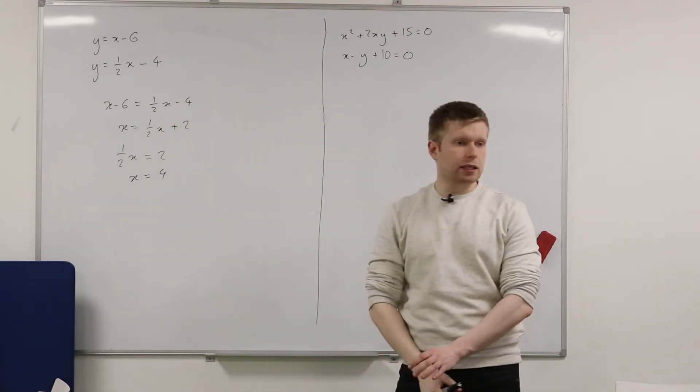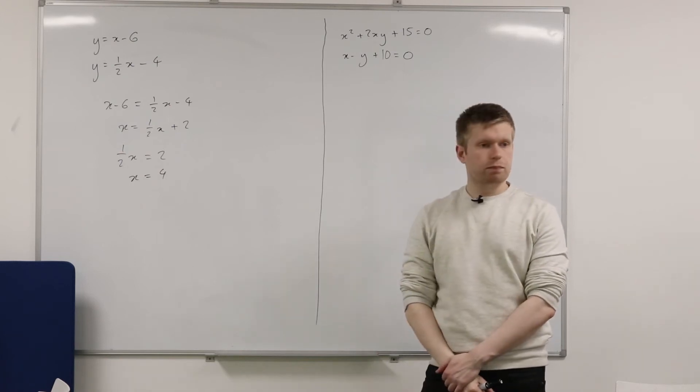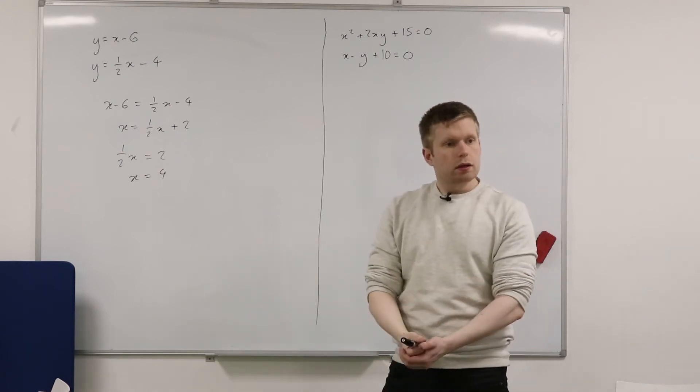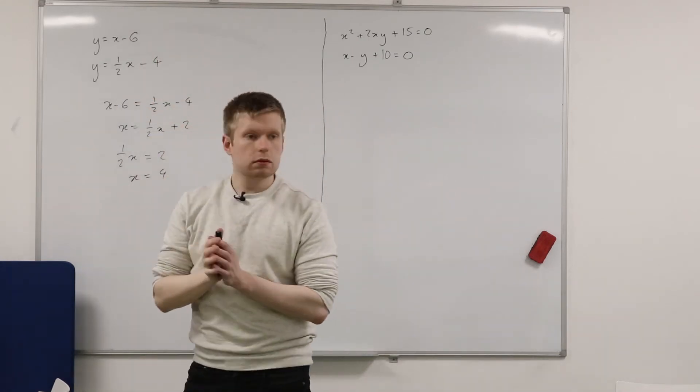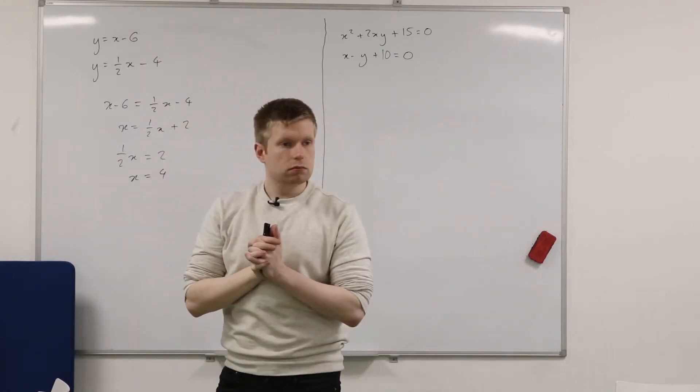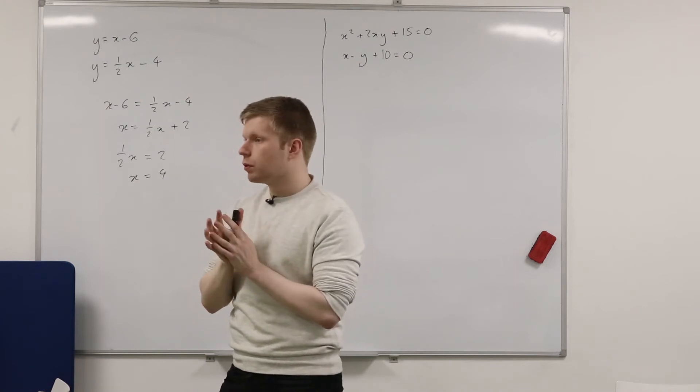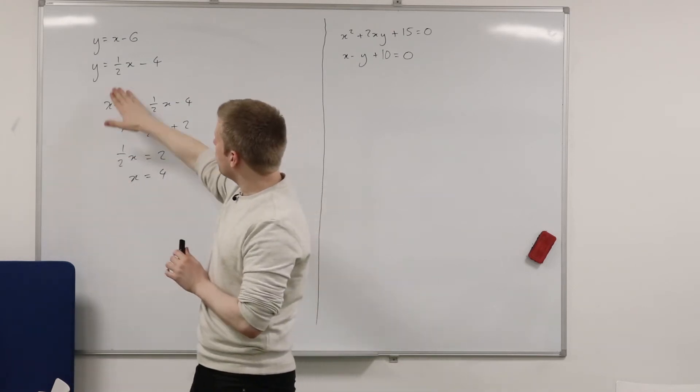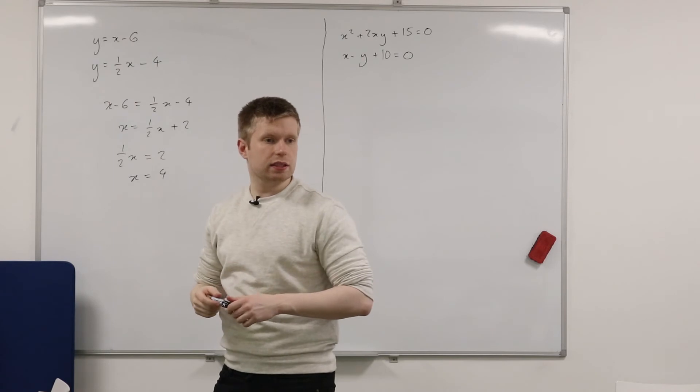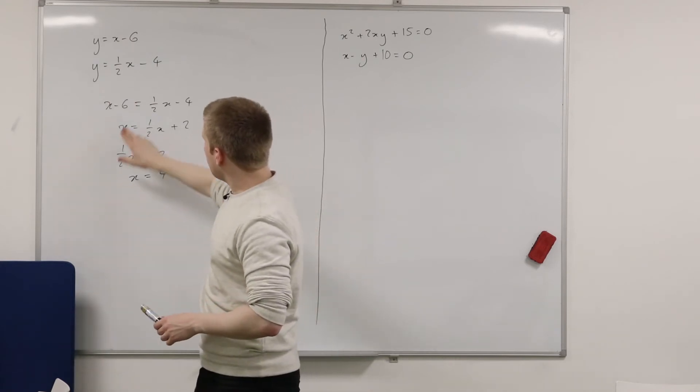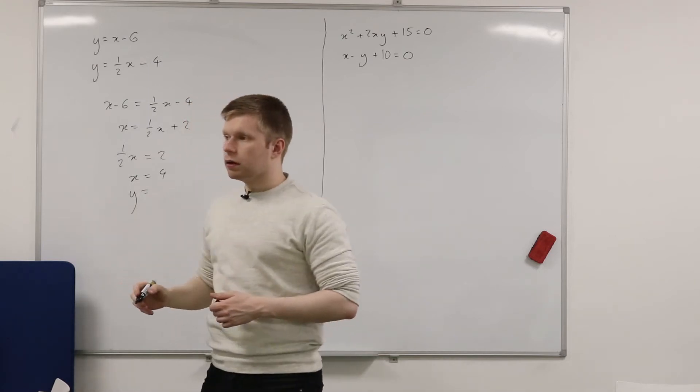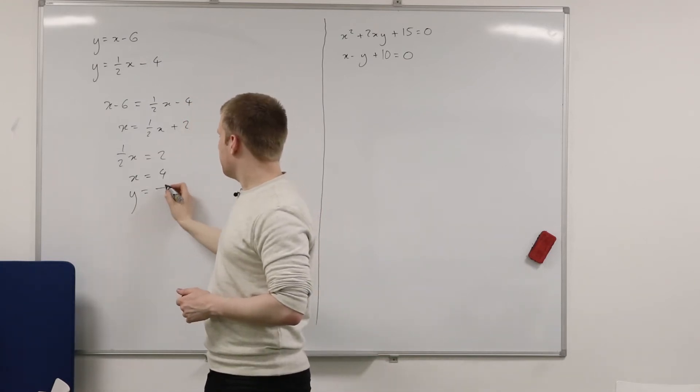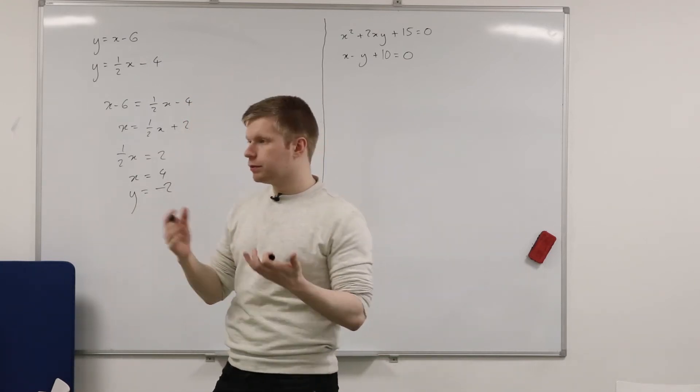So how could I find Y, given that X must be equal to 4? Does it matter which equation I stick it in? So I've got 2 to choose from, this one or this one. Since they're equal to each other, not really? No. It doesn't matter which equation I stick it in. So I'm just going to go for the first one because I don't really fancy doing halving. So if X equals 4, what must Y be equal to? You happy? Yeah, because it's 4 minus 6, which is negative 2.